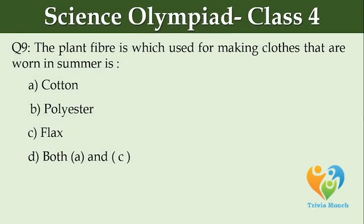The plant fiber used for making clothes worn in summer is: Option A: cotton, Option B: polyester, Option C: flax, Option D: both A and C.